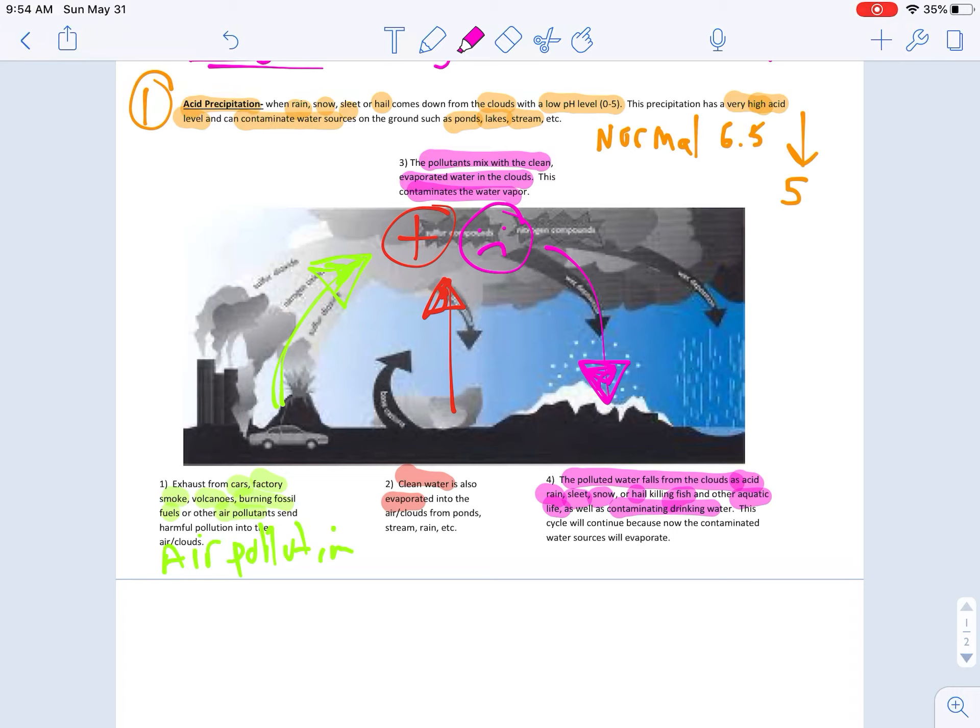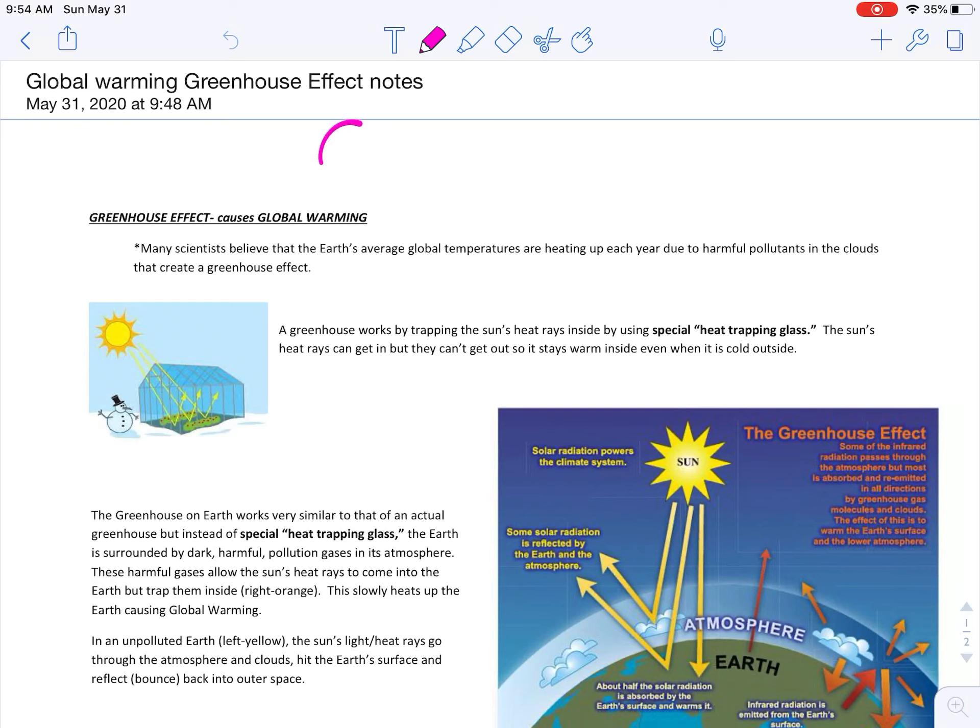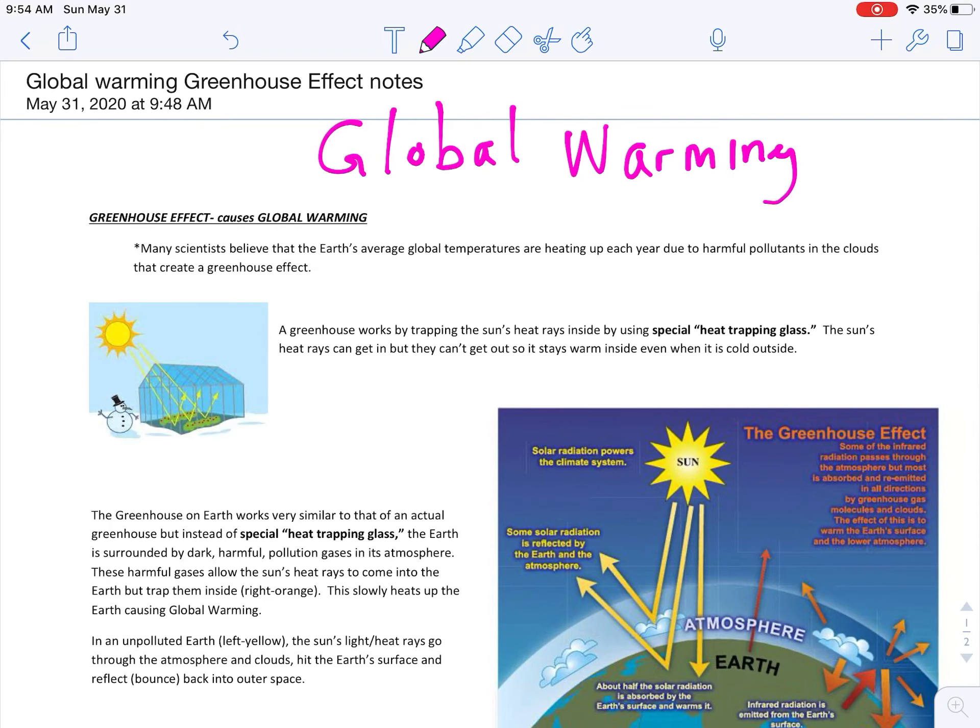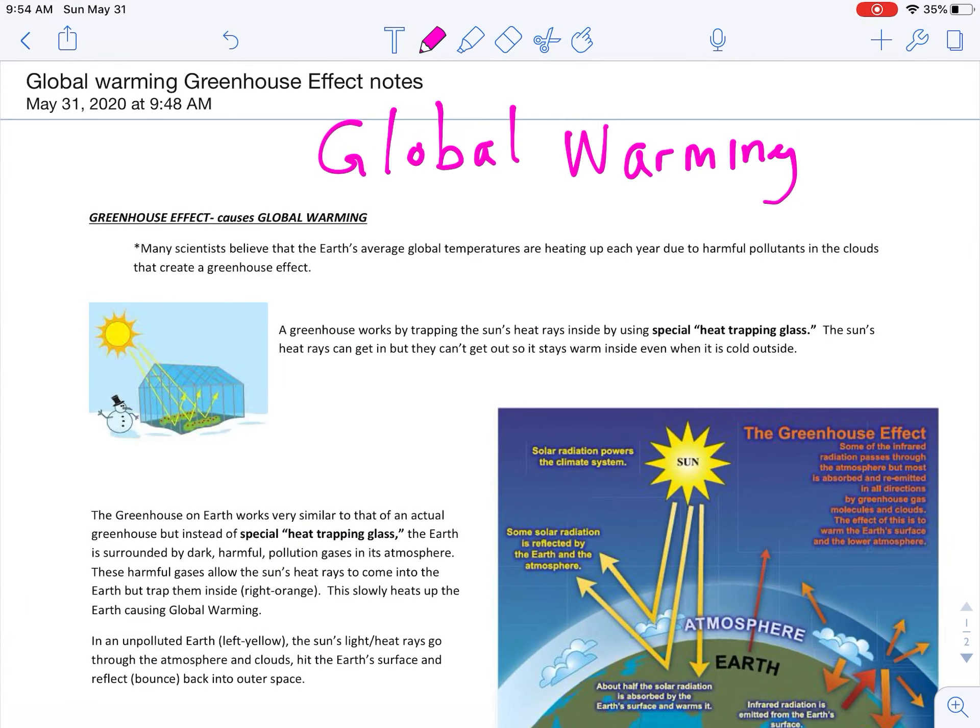The other long-term negative effect of pollution is what is called global warming. And I know you guys have all heard of global warming. You guys are going to see a video on this tomorrow. This is another long-term negative effect. We are starting to see the earth become a little bit warmer every single year. And this is things that people have been doing because of pollutants that people have been putting in the air for the last 50 to 100 to 200 years.